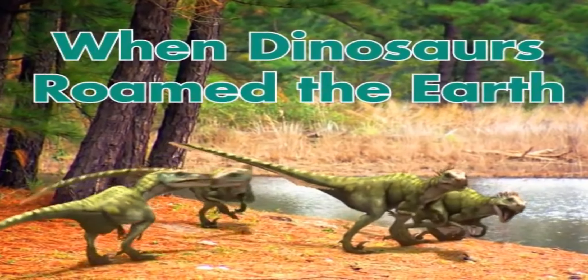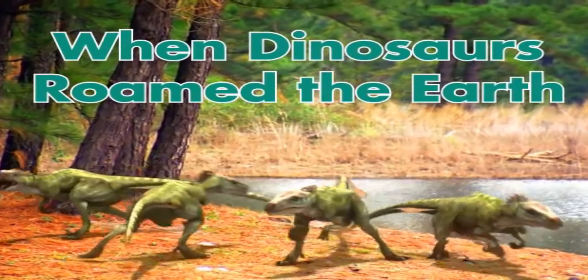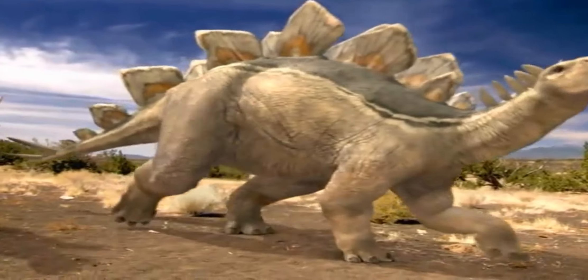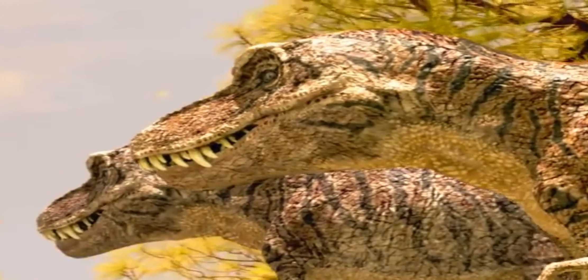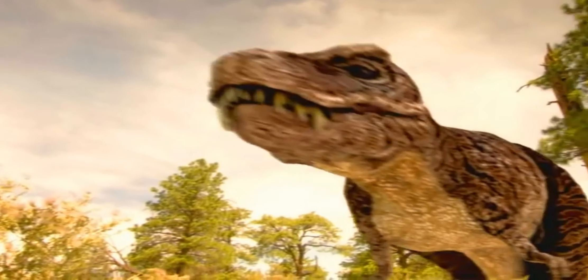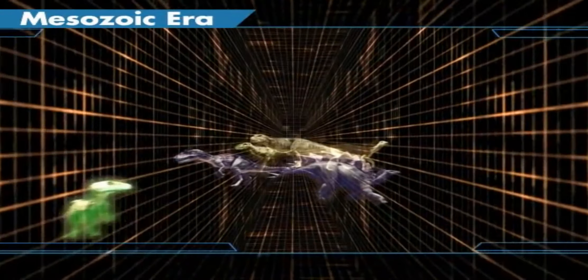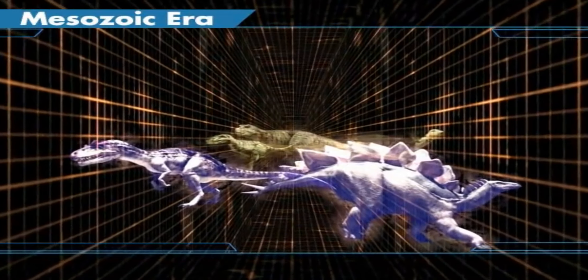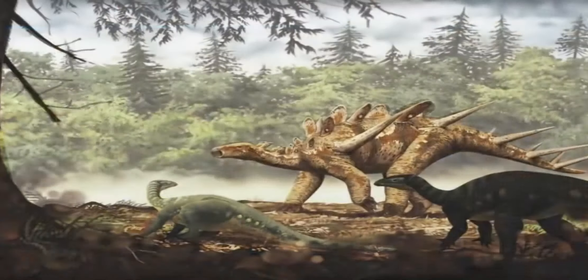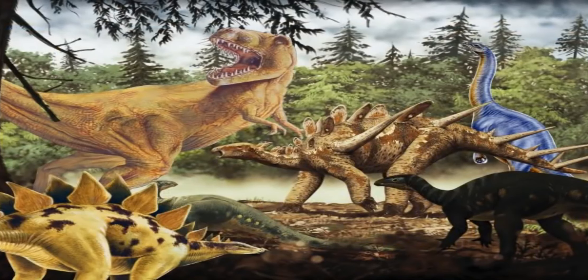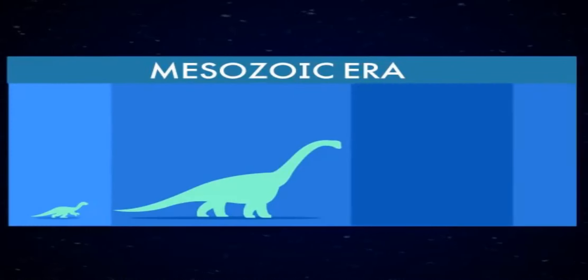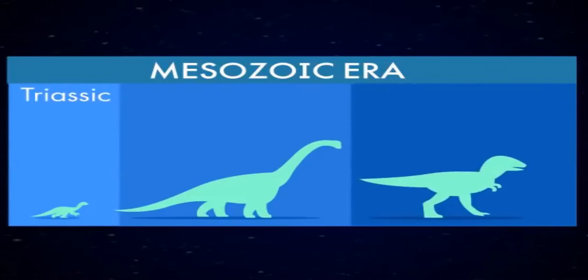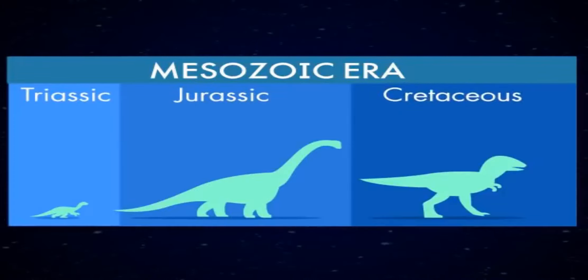When dinosaurs roamed the Earth. Stegosaurus. Triceratops. Tyrannosaurus rex. These are some of the most famous dinosaurs that roamed the Earth millions of years ago. Dinosaurs lived during the Mesozoic era, which lasted more than 180 million years. But not all dinosaurs lived at the same time. Different species appeared at different times during the Mesozoic era, which was separated into three periods: the Triassic, the Jurassic, and the Cretaceous.